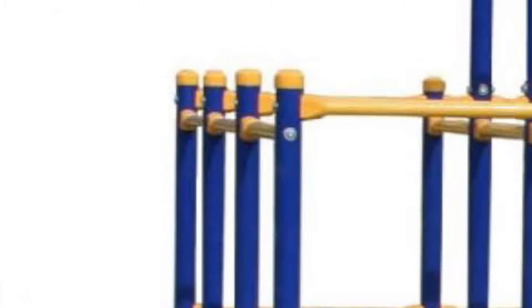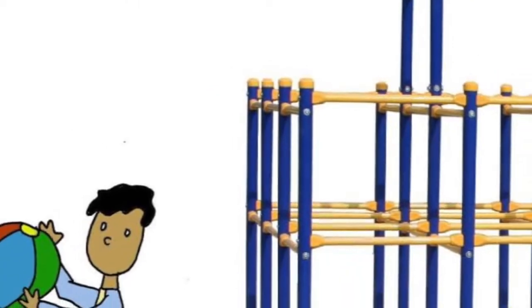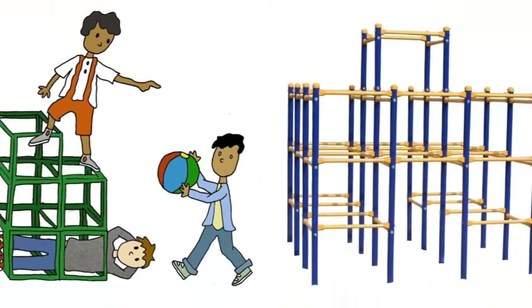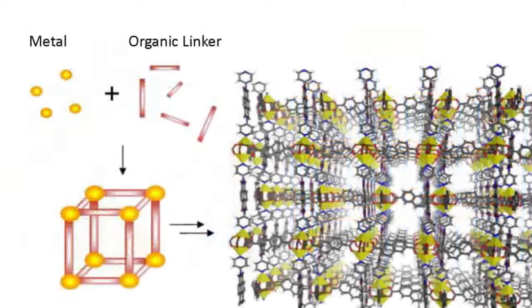Imagine that the nodes on this jungle gym are metal clusters and that the struts are organic linkers. And so they assemble to a three-dimensional framework and you know little kids can climb on this framework and same in chemistry.